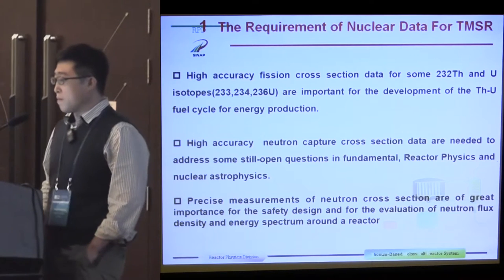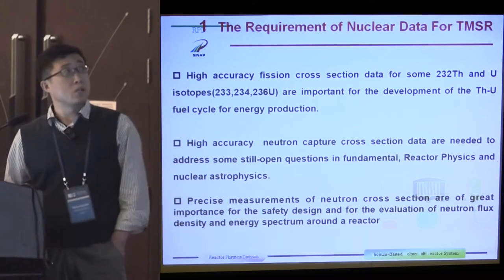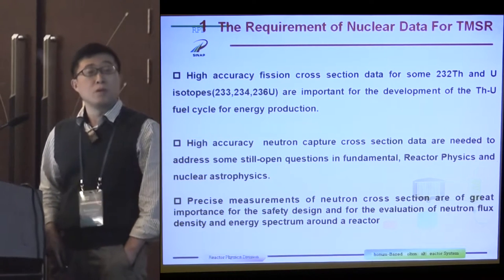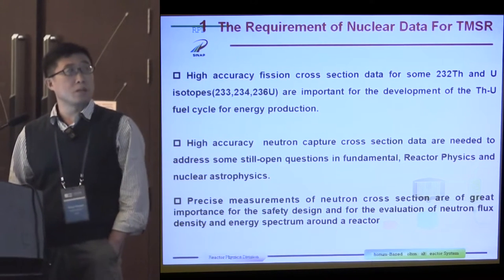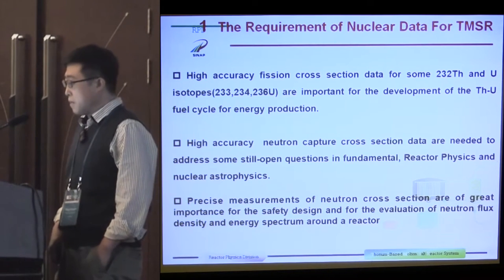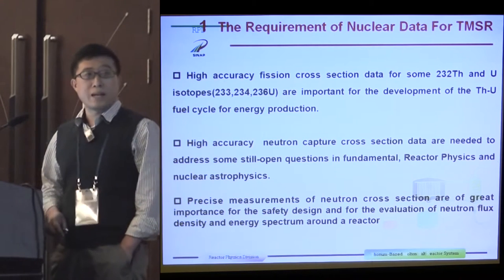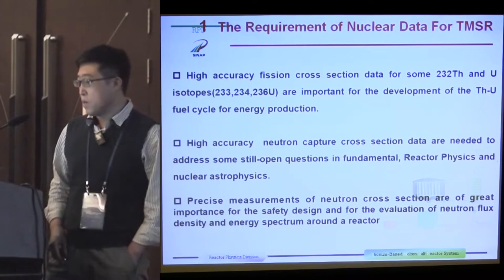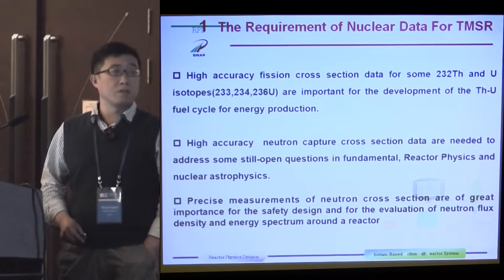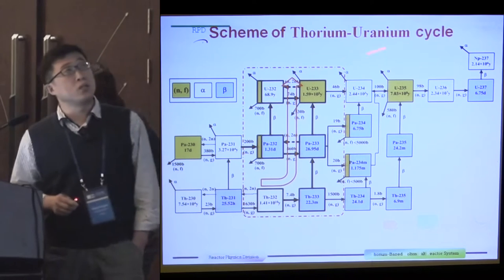High accuracy, efficient cross-section data for some thorium and uranium isotopes are important for the development of thorium and uranium cycles for energy production. High accuracy neutron capture cross-sections are needed to address some still-open questions in fundamental reactor physics and nuclear astrophysics. Three sets of measurements of neutron cross-sections are of importance for the safety design and nuclear reactor design. The scheme of thorium and uranium cycles.